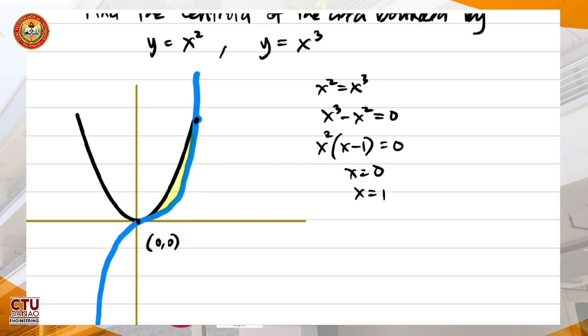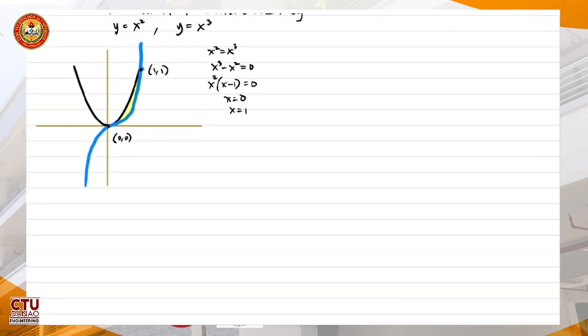And if x equals 1, the square or cube, that will be 1. So this is (1,1). That's it.